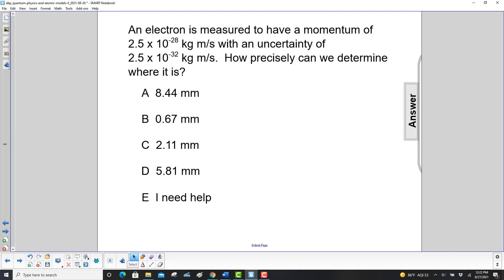An electron is measured to have a momentum of 2.5 times 10 to the minus 28 kilogram meters per second with an uncertainty of 2.5 times 10 to the minus 32 kilogram meters per second. How precisely can we determine where it is?